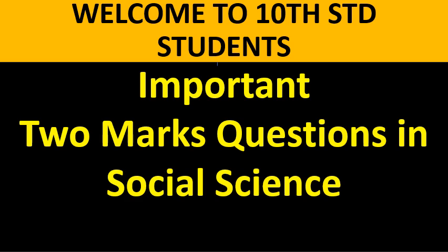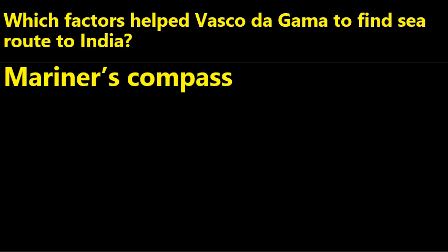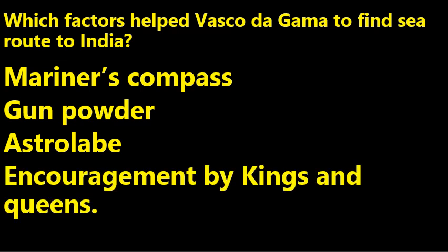Welcome to most important questions. First question: which factors helped Vasco da Gama to find a sea route to India? Answer: Mariner's Compass, Gunpowder, Astrolabe, and Encouragement by Kings and Queens.